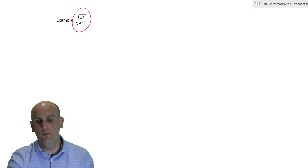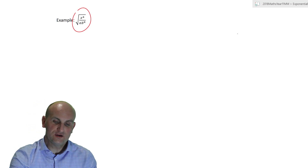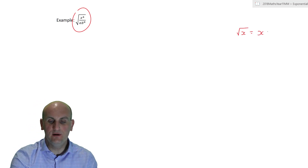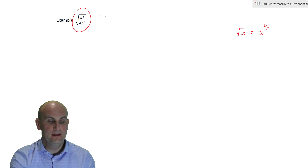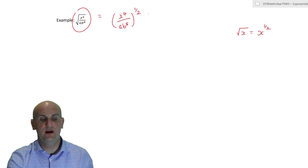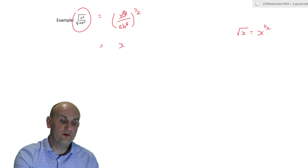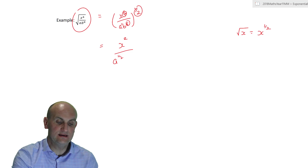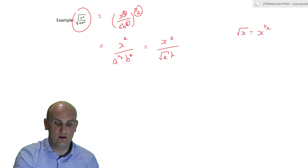To give a brief introduction to rational indices: square roots are called rational indices. The square root of x can actually be written as x to the power of a half. So if I have something like (a · b⁴)^(1/2), I multiply every power by a half: four times a half is two, one times a half is a half, and eight times a half is four. Writing this out gives the square root of a, times b to the power of four.